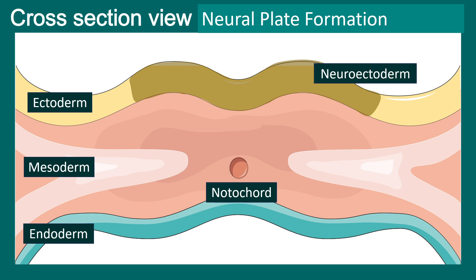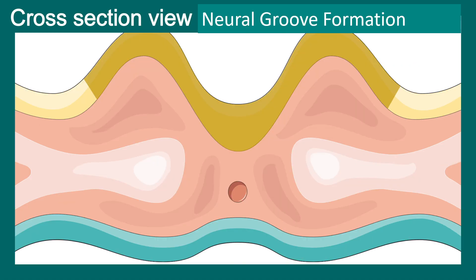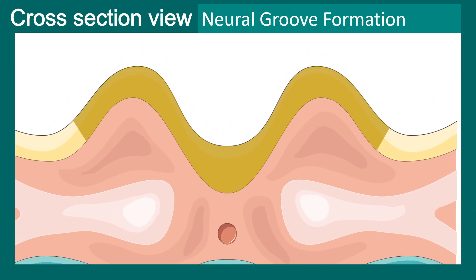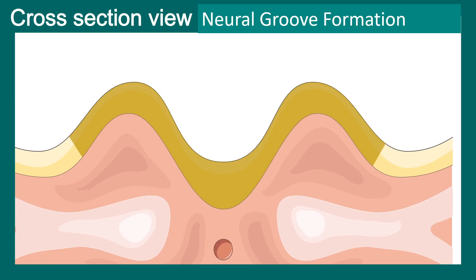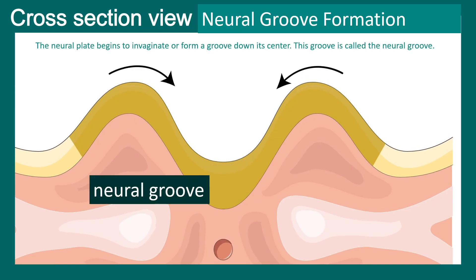This formation — this induction — is happening within the time period of day 18 to day 20. After that, a groove would be formed. This particular groove is known as the neural groove, because the neural plate begins to invaginate, forming a dimple, a groove in the center — that is the neural groove.